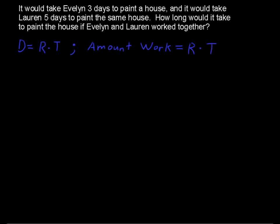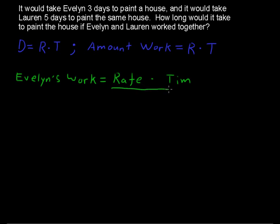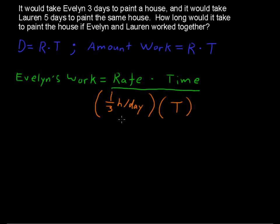Looking at each of these girls individually, let's look at Evelyn's situation. Evelyn's work equals her rate multiplied by her time. Setting up a little chart: Evelyn's rate is one-third of a house per day. It takes her three days to paint the house, so every day she paints a third of the house — after two days she'd have two-thirds done, and after three days she'd have three-thirds, or the full house. So we have one-third of a house per day times t, where t is the time they work together.